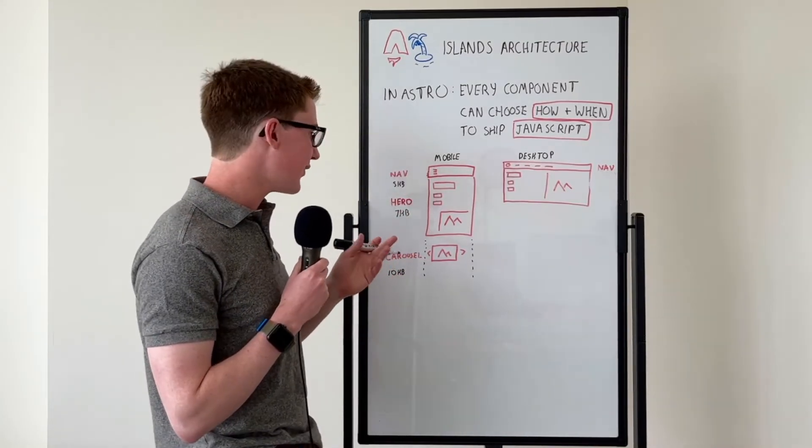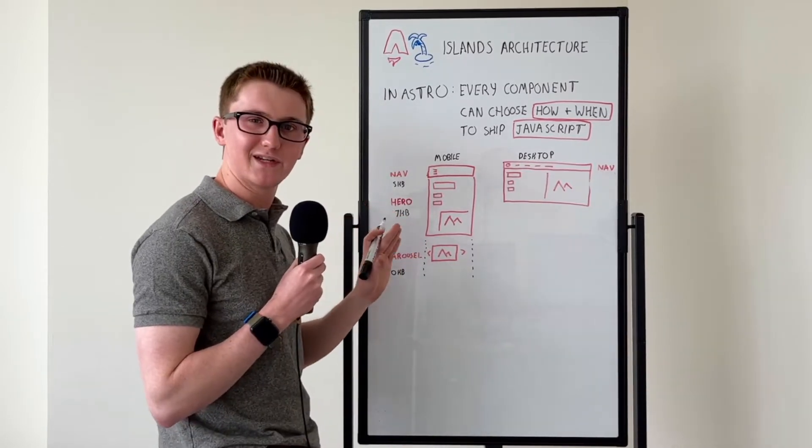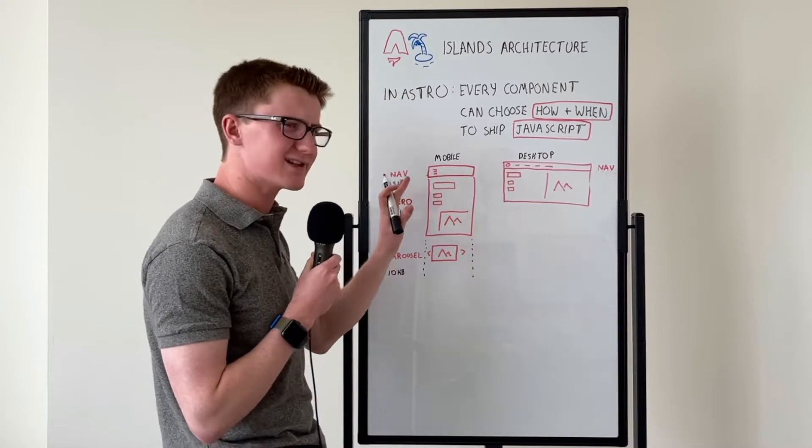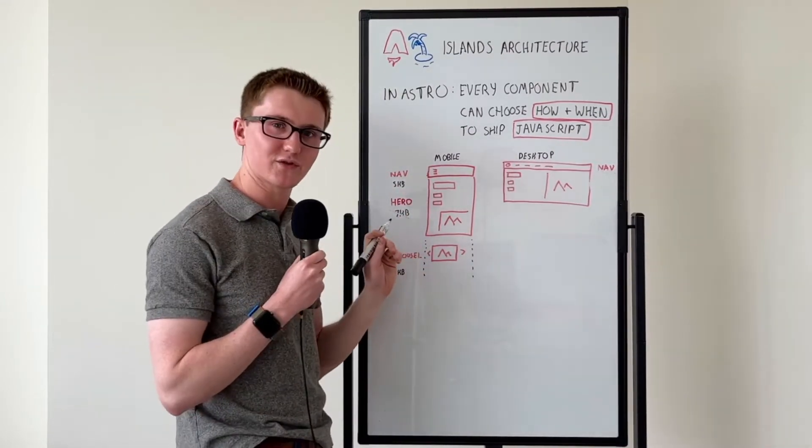So Astro said, why don't we let you control those kilobytes? For example, the hero banner doesn't need any JavaScript since it's just some text and links. We can server render that, so let's avoid shipping JavaScript for that island.